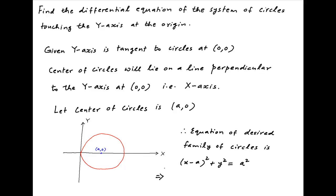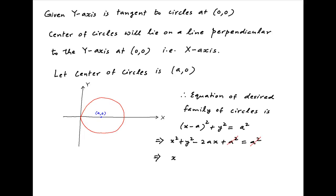This can be written as x² + y² - 2ax + a² = a². The a² terms cancel across both sides, and so we get x² + y² = 2ax. Dividing by x across the board, we get x + y²/x = 2a.